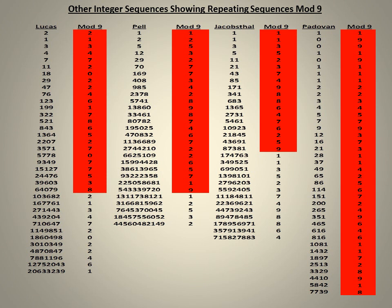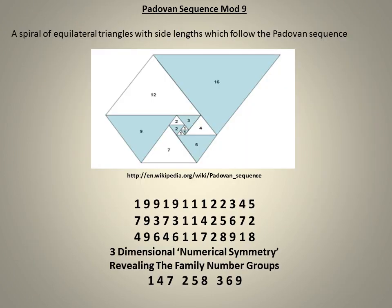Here we can see the modulo for other important integer sequences. Both Lucas and Pell sequences have a 24-number sequence that repeats and display two-dimensional numerical symmetry showing number pairs. The Jacobsthal sequence has an 18-number sequence that repeats and displays numerical symmetry in two dimensions. The Padovan sequence is probably the most interesting of all — it has a 39-number sequence which displays a three-dimensional numerical symmetry, showing the family number groups 1-4-7, 2-5-8, and 3-6-9 in the columns. This is an extremely important integer sequence whose properties may not yet be fully appreciated.